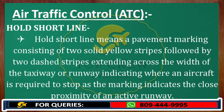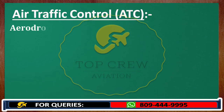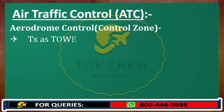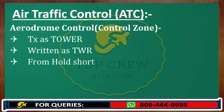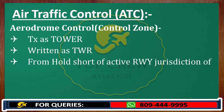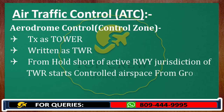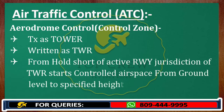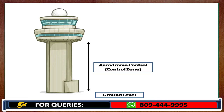Now let's move further with aerodrome control. We also call it control zone, to be transmitted as 'tower' and written as TWR. From both sides of the active runway, jurisdiction of tower starts. Aerodrome control, or control zone, is a controlled airspace from ground level to a specified height. If you assume it as a 3D cylinder — look at this figure — from ground level to the specified level within a specified radius.